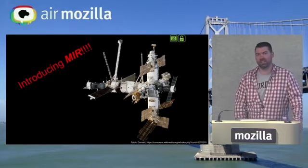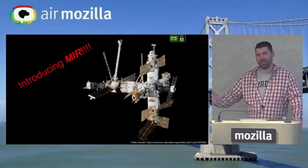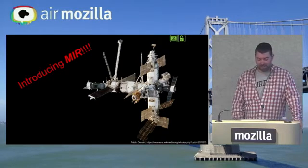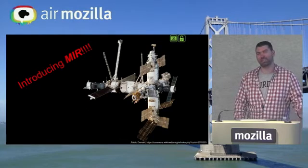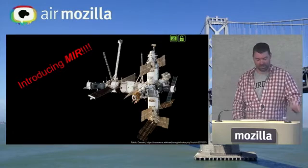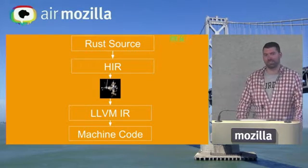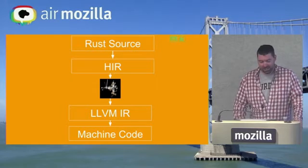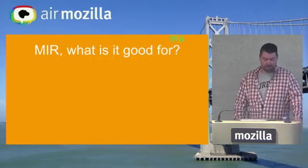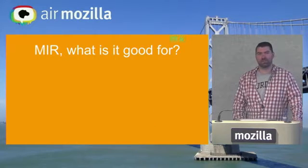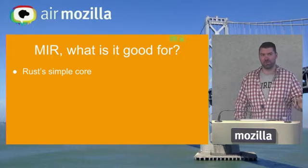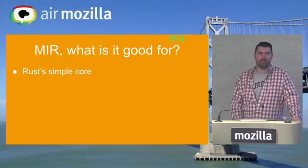Recently — actually today — the Rust team flipped a switch and now MIR is part of the Rust compiler. MIR stands for Middle Intermediate Representation, and it's coincidentally the same name as a spaceship — that's the spaceship. There's now a tiny spaceship in the compiler, and it sits between the high-level IR and LLVM IR.